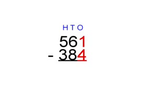We can see that you cannot take 4 from 1, so we have to borrow from the 6. The 6 becomes 5. Then we put the 1 on top of the 1, which equals 11. Then we do 11 minus 4, which equals 7.